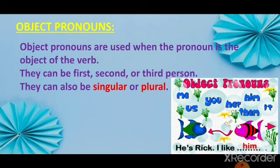Me is singular. You is singular and plural. Us refers to more than one person. Him is used for boys, that is male, and her is used for girls, that is female. They both are singular. Them is used for more than one person. And it is used for one thing, that is an animal, bird, or object.